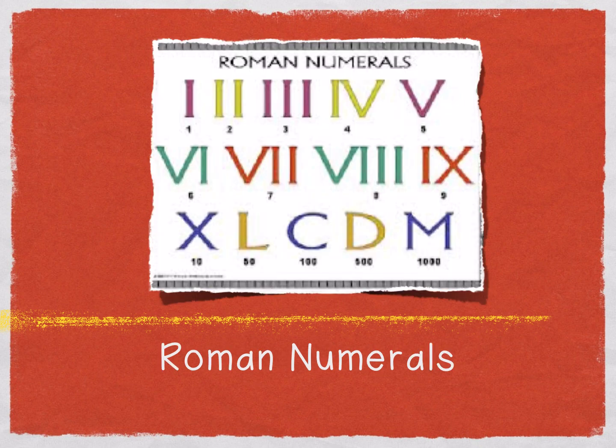When Fibonacci was a boy, Roman numerals were the number system in use in Italy. But as a boy, he used to travel with his father, who was a merchant, to faraway places, and one of the places they traveled to was Africa. In Africa, they learned of a new number system called the Arabic numbers, which are the numbers that we use today.